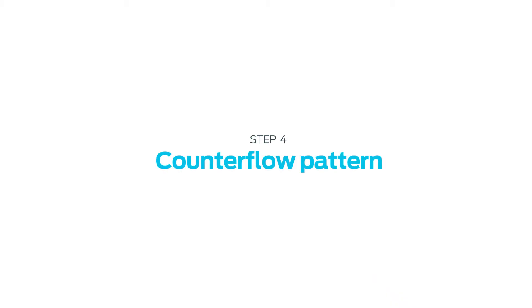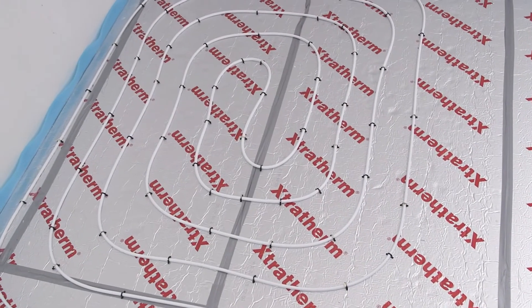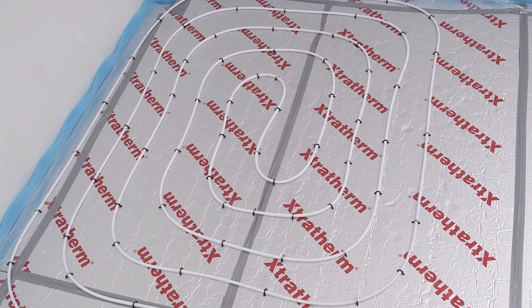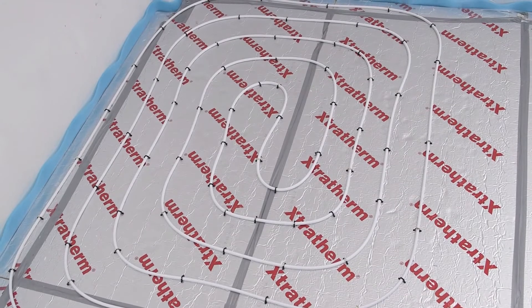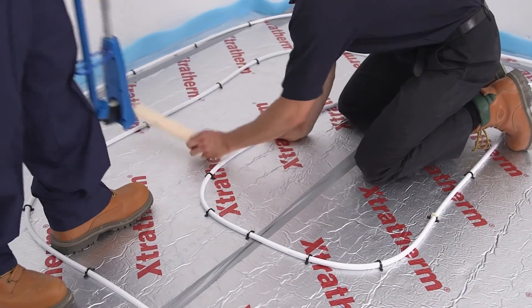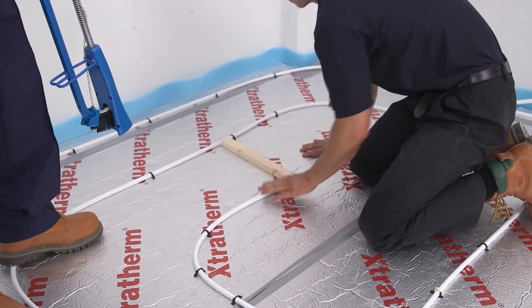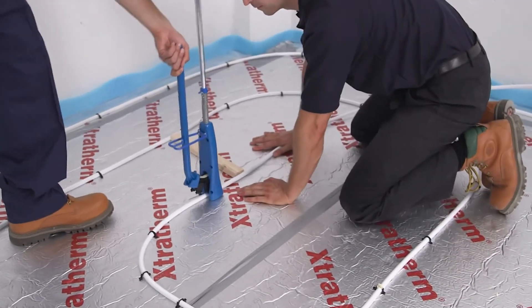Counter flow pattern. This is an example of the counter flow laying pattern. It may at first seem more complicated, but it's often easier. When installing counter flow, the pipe is laid and stapled in a spiral pattern, moving into the centre of the circuit where a double return is performed.